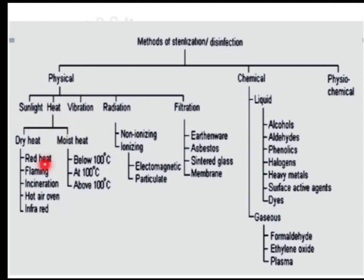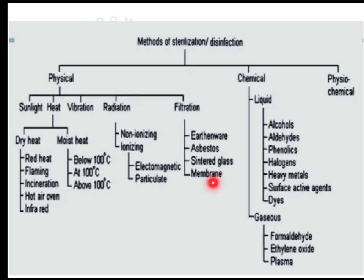In dry heat there are methods like red heat, flaming, incineration, hot air oven, and infrared. Moist heat sterilization is divided into sterilization below 100°C, at 100°C, and above 100°C. Radiation is divided into non-ionizing and ionizing radiation. Filtration is classified based on different filters: earthenware, asbestos, sintered glass, and membrane filtration. Chemical methods will be discussed under disinfection.